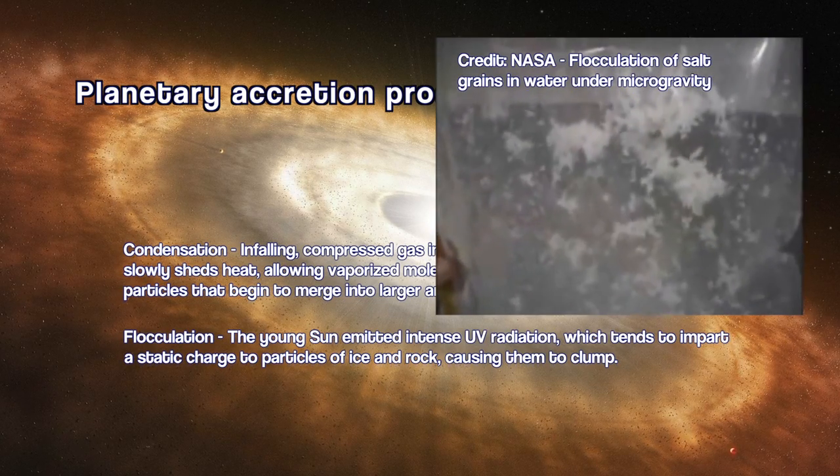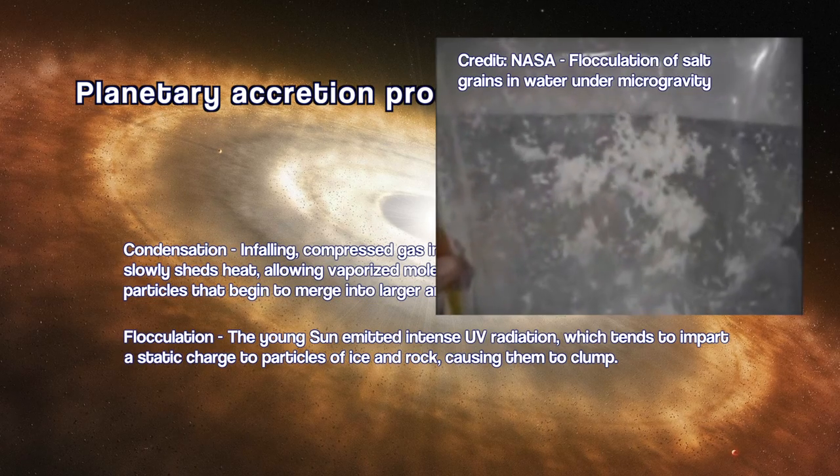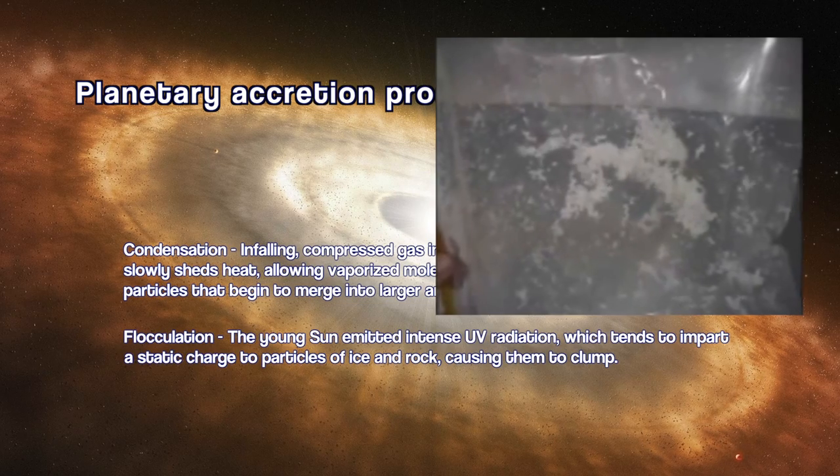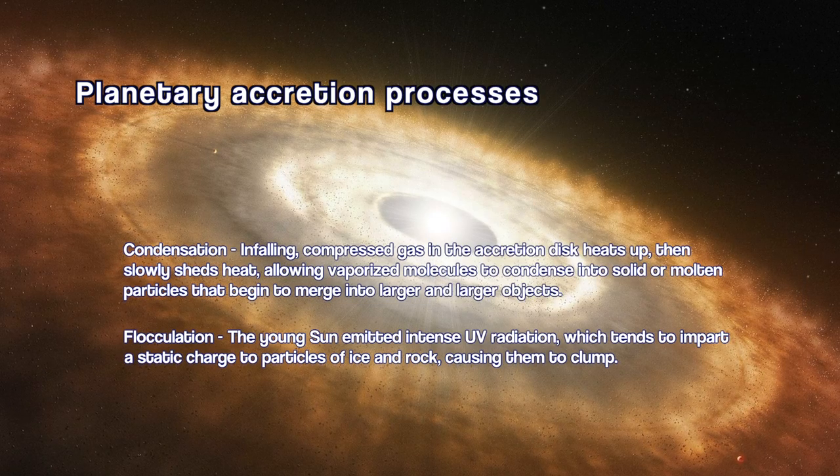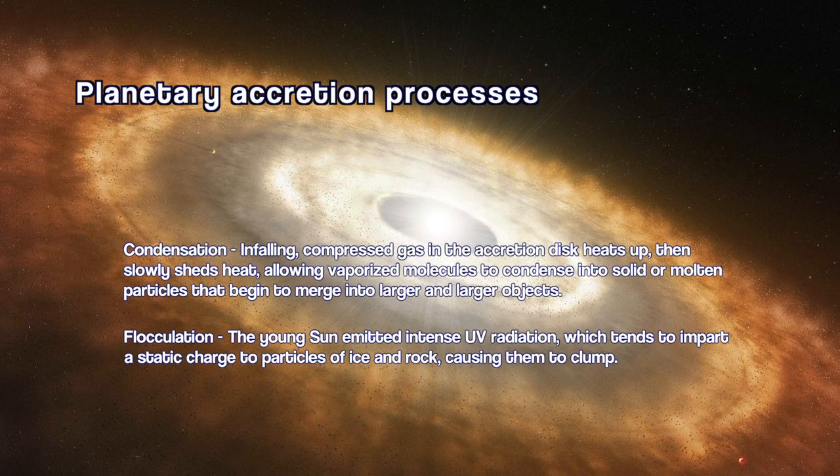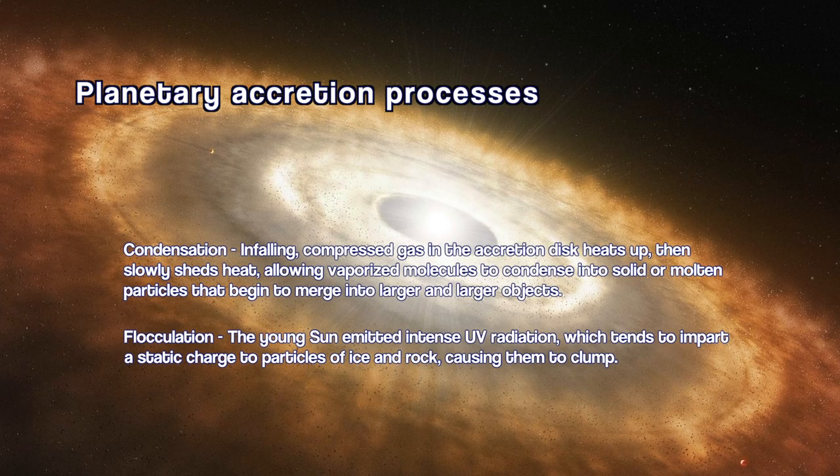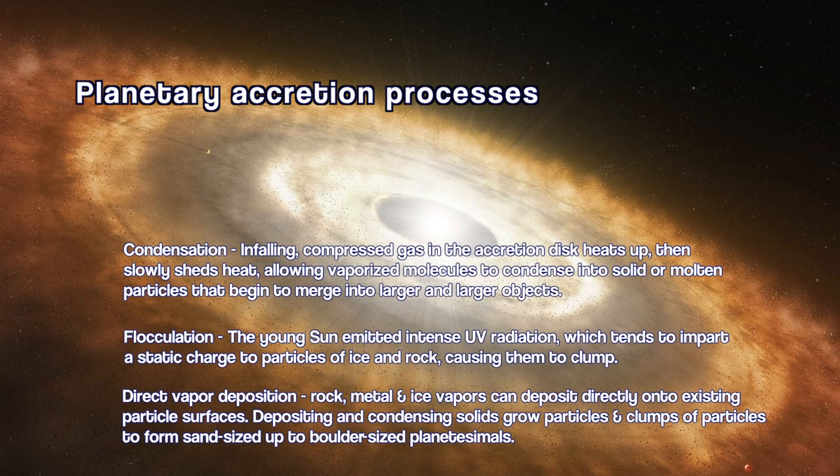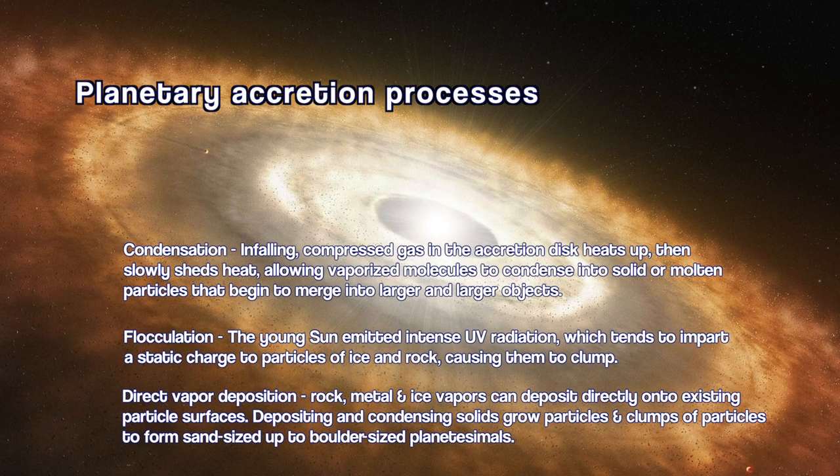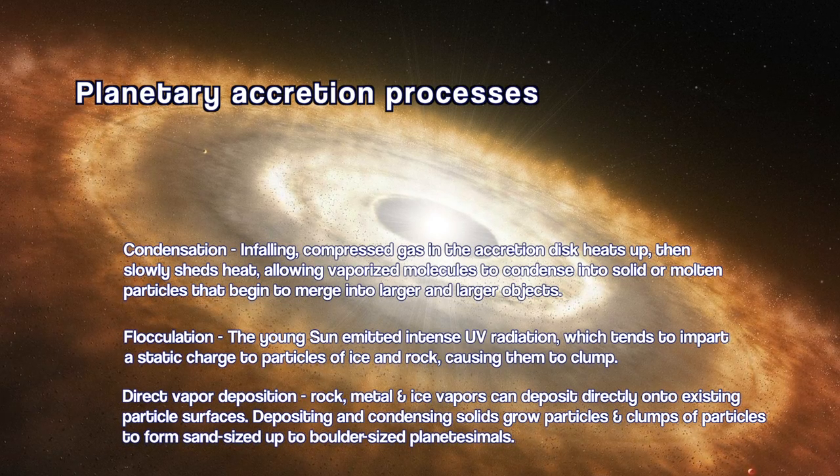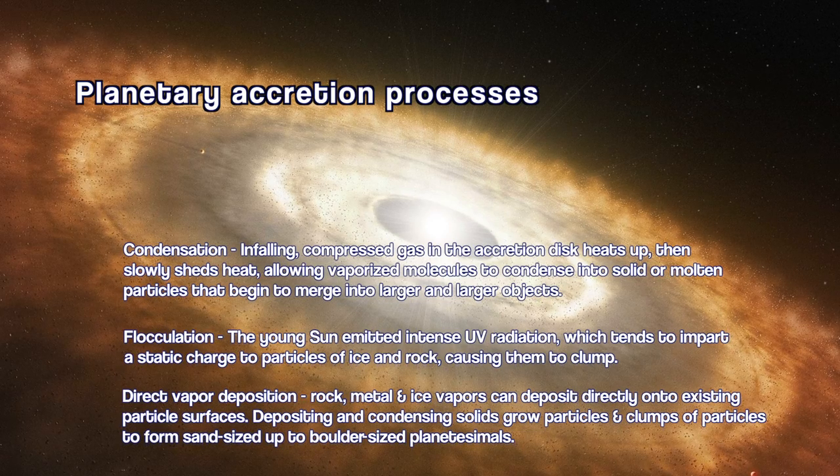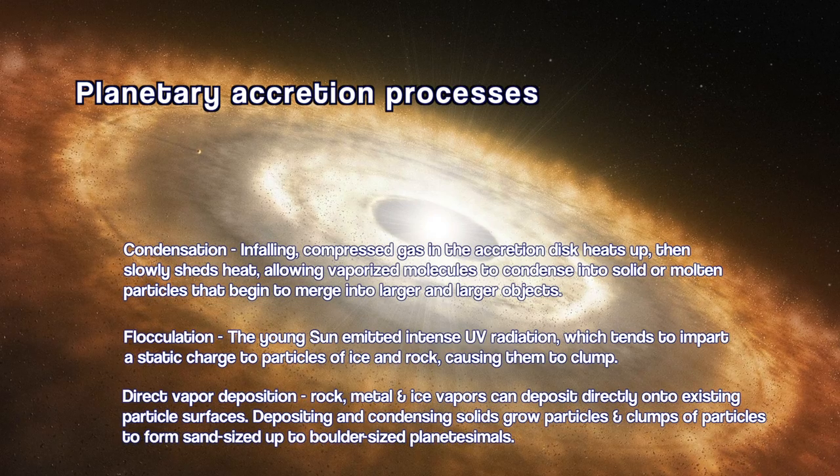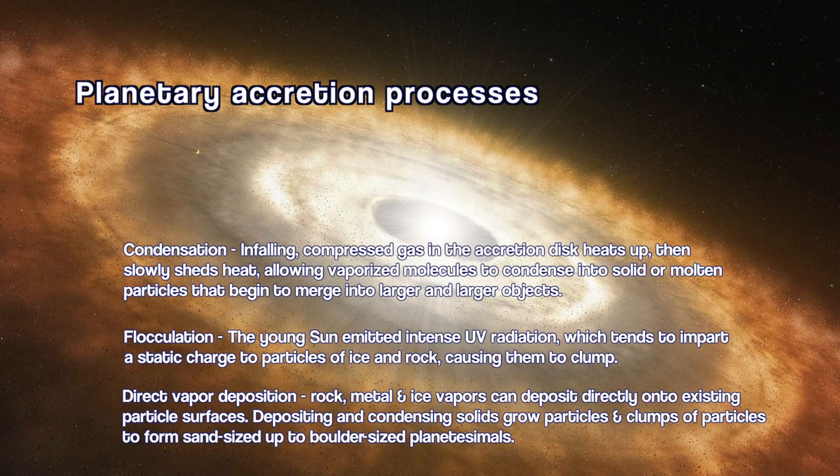And this can be either particles of rock or particles of ice, or obviously if you have little droplets of molten material, then they'll not just flocculate, they'll actually merge to form larger droplets. So that gets you started. And then you also have direct vapor deposition of the gas that's still there, the stuff that, the gas that can condense, the gases of light volatile compounds like CO2, water, methane, ammonia. Those things can deposit directly onto the surfaces of particles once particles are there.